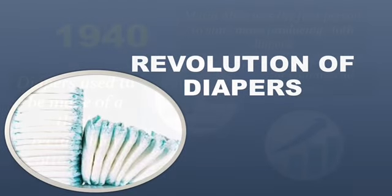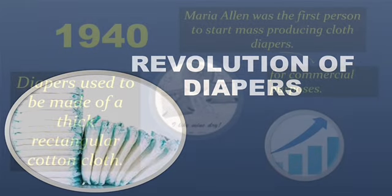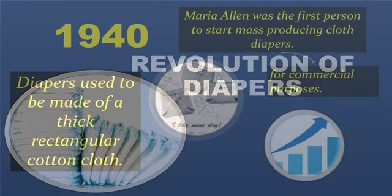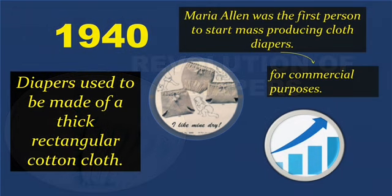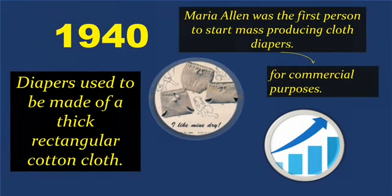Now is the part where the revolution take place in the early 1940s. In 1940s, diapers used to be made of a thick rectangular cotton cloth which started with the industrial revolution in 1820.